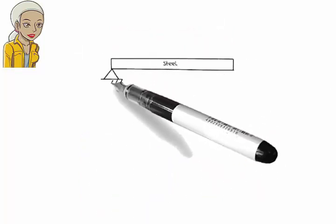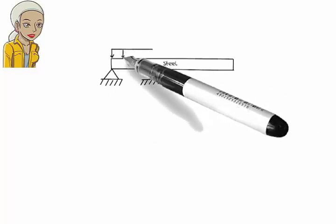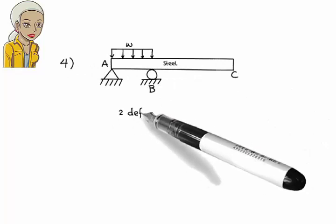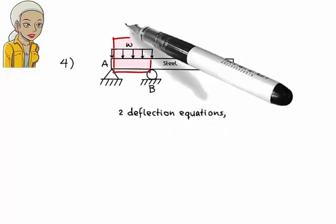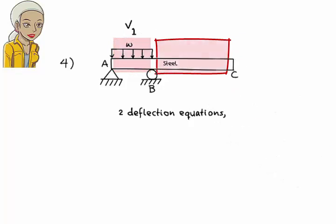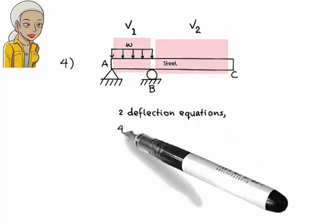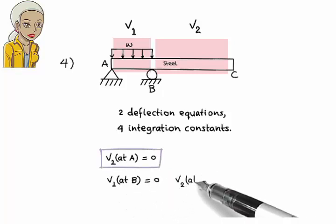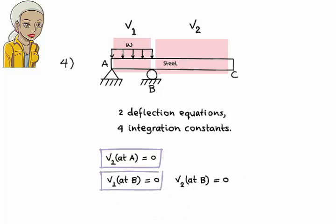Solution for Problem 4. We need 2 deflection equations for this beam. Since each equation has 2 integration constants, we need a total of 4 boundary equations. They are: deflection at the pin support must be 0; deflection at B where the beam rests on an internal roller must be continuous and 0 — meaning both V1 and V2 evaluated at point B must yield 0; and slope at B must also be continuous.